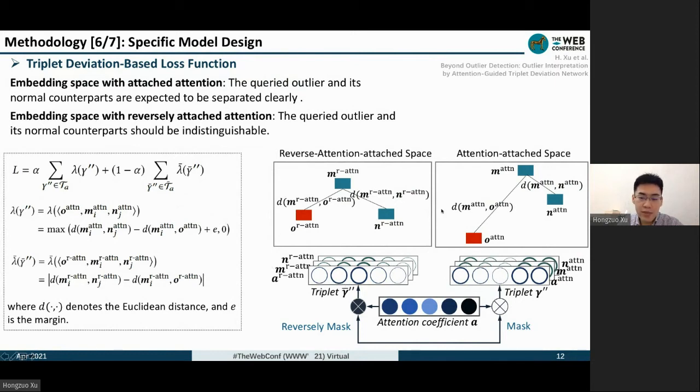The second loss term is to narrow the difference between d_mn and d_mo. In the loss function, we use alpha to get a trade-off between these two targets, and alpha is a hyperparameter.